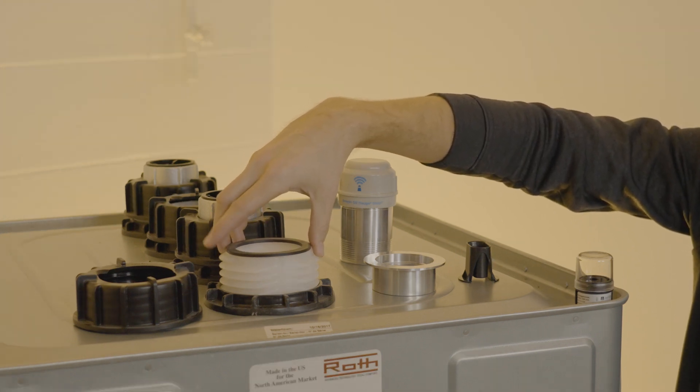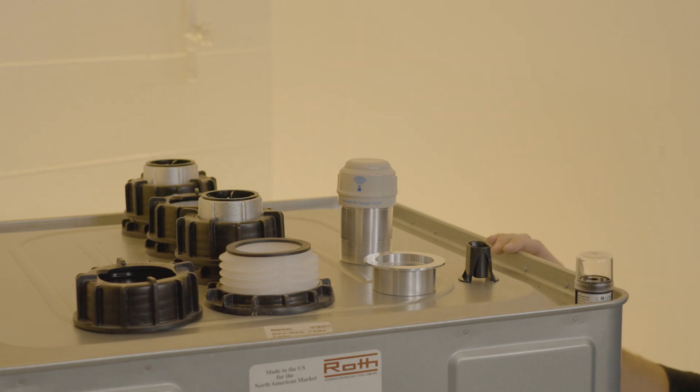So the first step in this installation process is to remove the float gauge that's in the tank already.